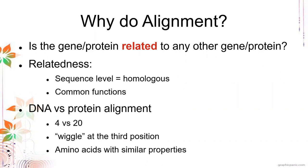It depends on your needs and what exactly your question is. If you ask whether it's better to use DNA or proteins to align sequences, it depends on the particular question. Let's consider the number of variations. For nucleic acids, we have four nucleotides, so sequences vary among four. For proteins, we have 20 amino acids, giving significantly greater variety than DNA.